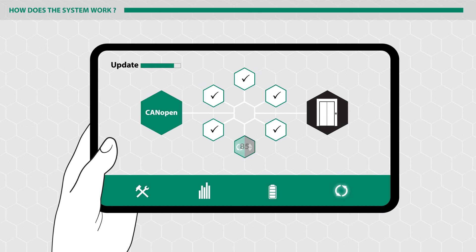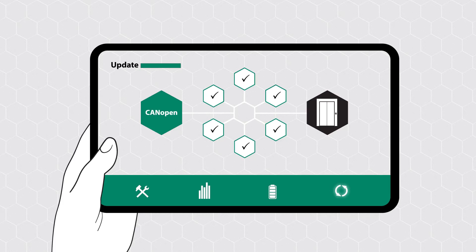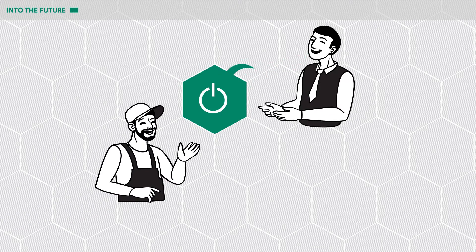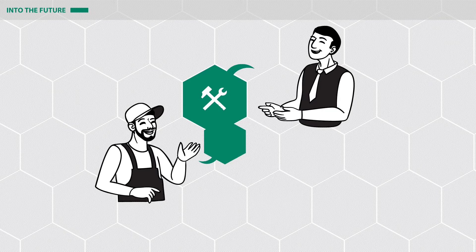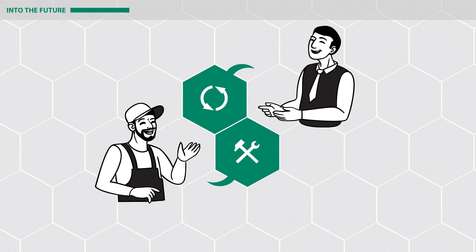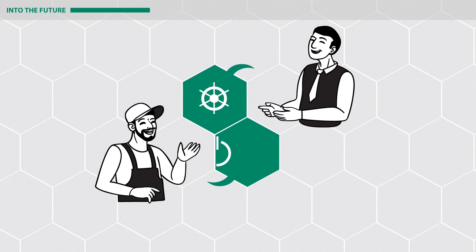Frequent vendor-neutral functional checks ensure the future plug-and-play capability of CANopenLift. The continuous exchange of information between technicians and developers ensures that CANopenLift is always adjusted to new market requirements and therefore stays up to date.